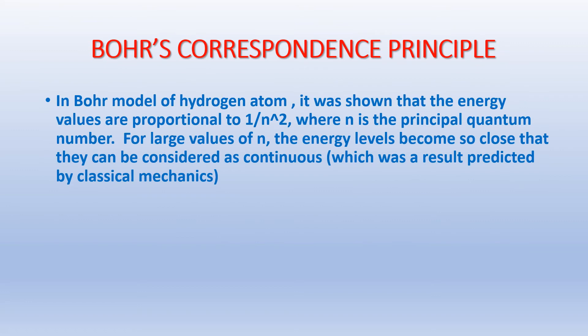As an example, consider Bohr's model of the hydrogen atom. Before the Bohr model, according to classical theory, radiation from atomic transitions was expected as a continuous spectrum. But then a line spectrum was observed, and that was explained with Bohr's model of the hydrogen atom. It was shown that energy is proportional to 1/n², where n is the principal quantum number. For large values of n, the energy levels become so close that they can be considered continuous. So within the limit of large n, Bohr's result coincides with the classical result of a continuous spectrum.